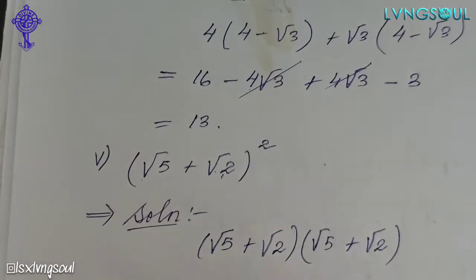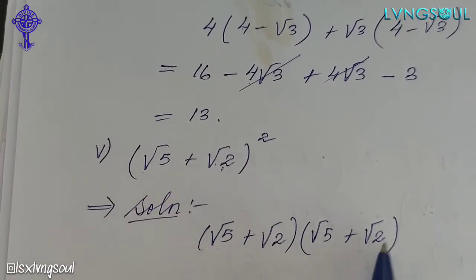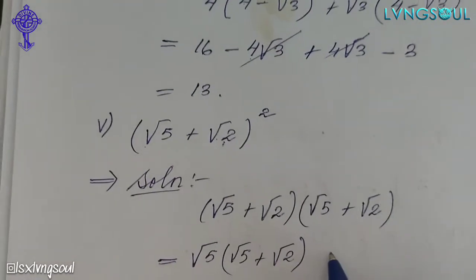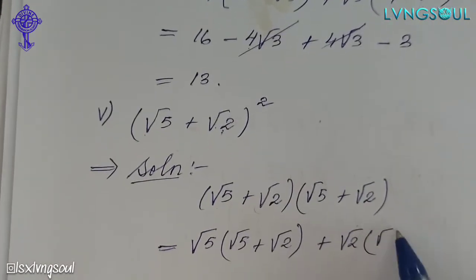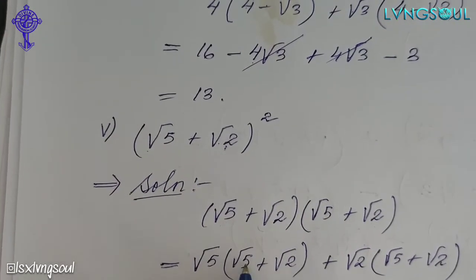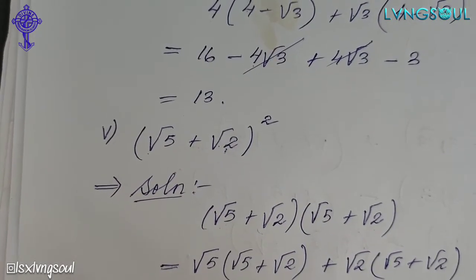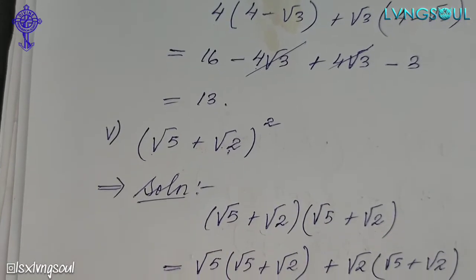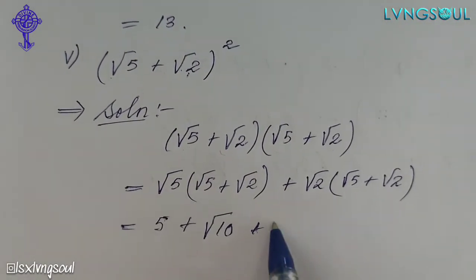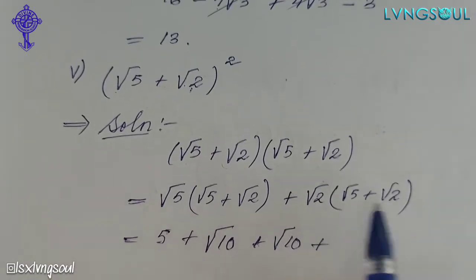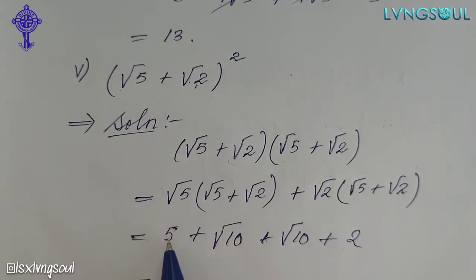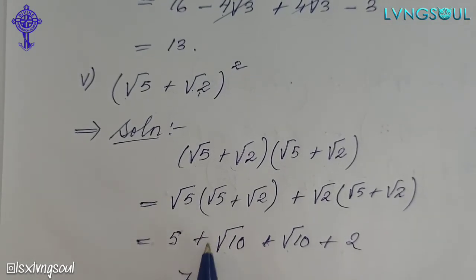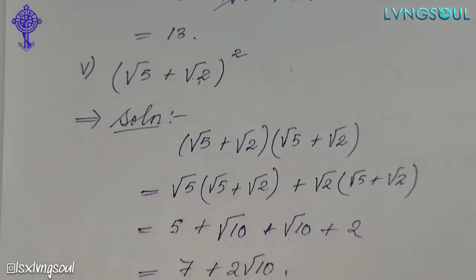So here is the arithmetic method. Root 5 into root 5 plus root 2, plus root 2 into root 5 plus root 2. So root 5 into root 5 is 5, plus root 5 into root 2 is root 10. Plus root 2 into root 5 is root 10, plus root 2 into root 2 is 2. So 5 plus 2 is 7, plus 2 root 10. That gives root 7 plus 2 root 10.